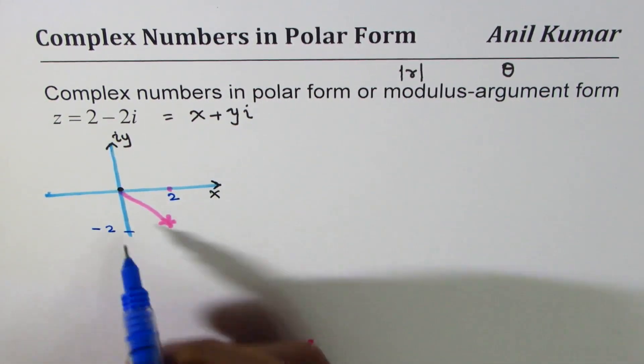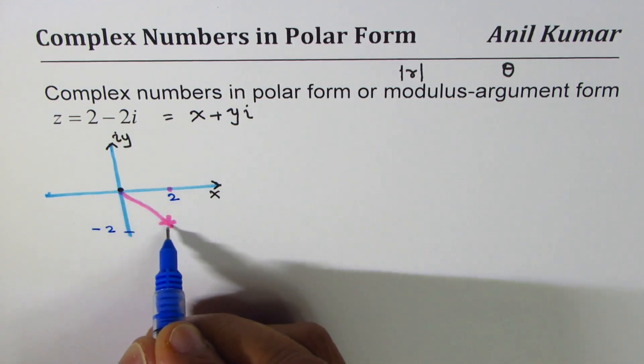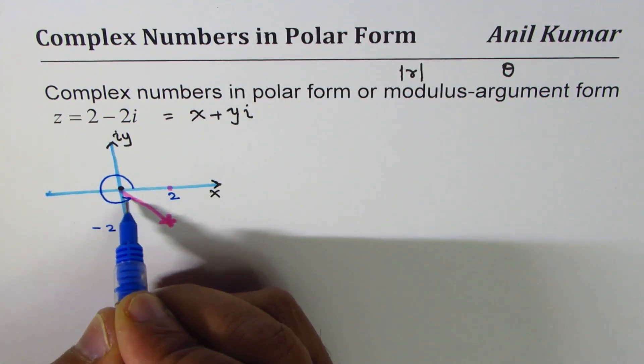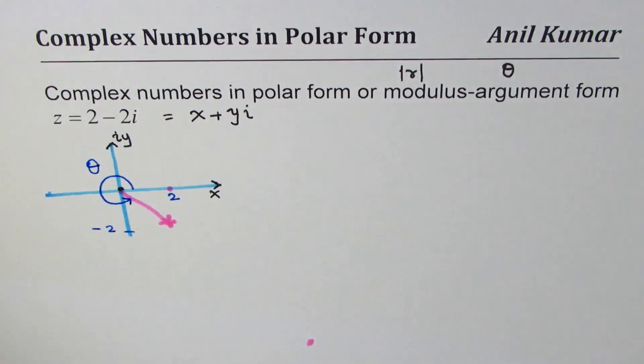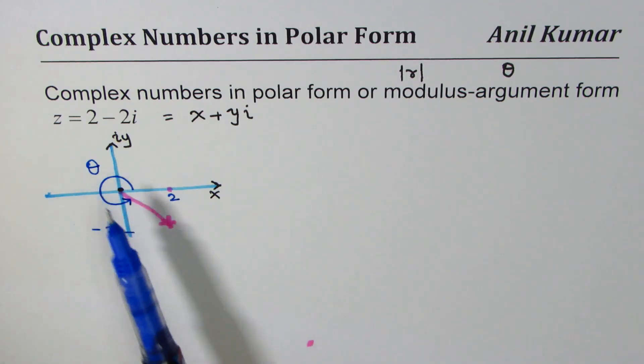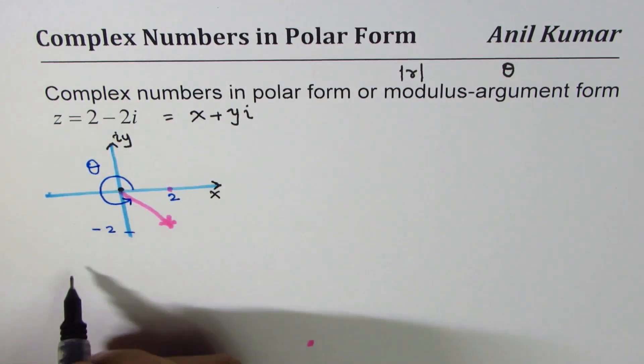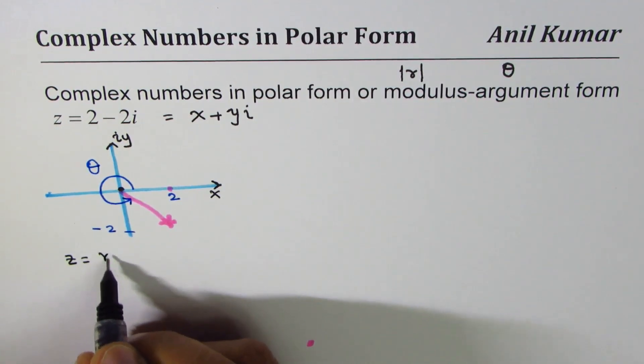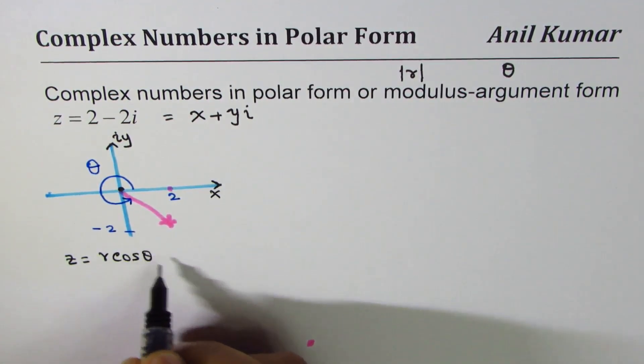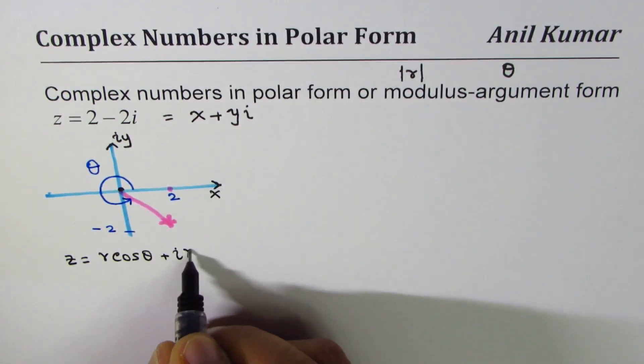So the r is the length of this complex number and argument is this theta angle. So in this particular example the complex number lies in quadrant 4. We could also write theta as minus theta; both ways it works out fine. So you could write this number as r cos theta plus i r sine theta.